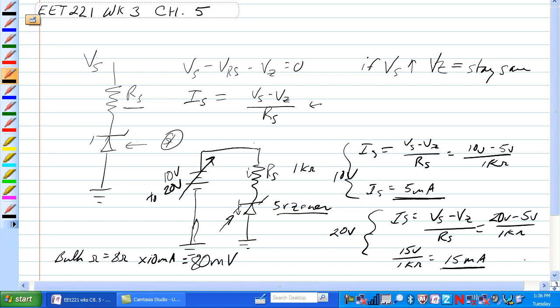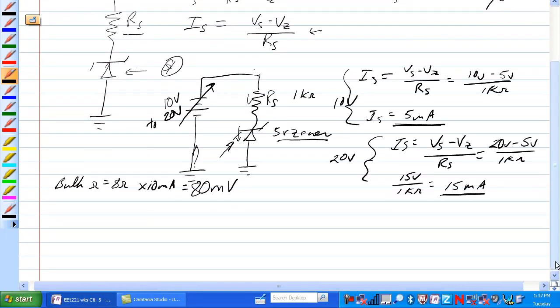What if you needed to know the amount of power dissipated by this? Let's start when the power supply is at 10 volts here, and the voltage across here, the RS is 5 volts, and the voltage across the Zener, of course, is 5 volts.